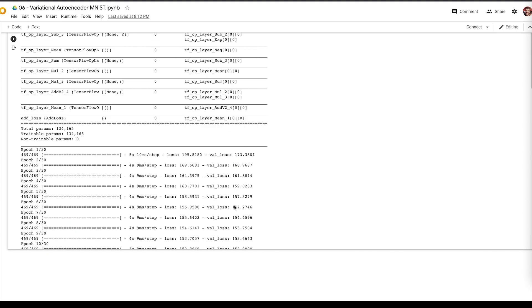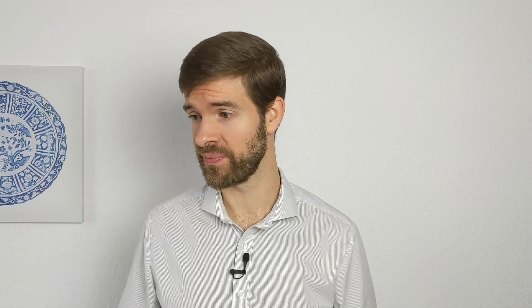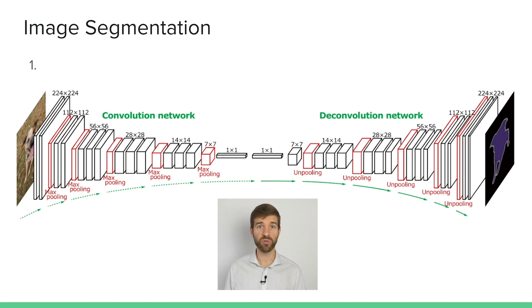With variational autoencoders or autoencoders in general, we can do lots of cool things. One thing we already saw in a previous lecture is image segmentation — and now you can understand what that image resembles: it's an autoencoder. We have our input image, we do convolutional layers, have our latent space representation, then deconvolutional layers to upscale again. The only difference is that instead of predicting the input, we swap it with the segmentation map. You can actually pre-train this with a standard autoencoder and then swap the output for the segmentation mask — giving us unsupervised pre-training.